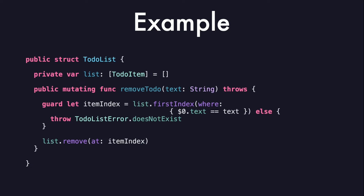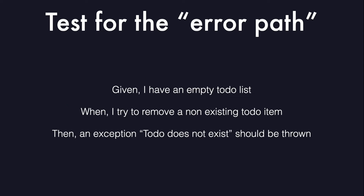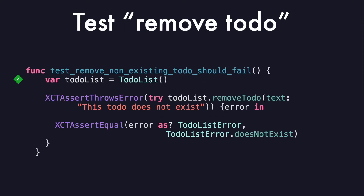Looking at the implementation for remove to-do again, the code actually has two paths: the happy path which we just tested, and an error path with the guard statement which throws an exception. We already tested the happy path, so let's test the error path. Using the given/when/then syntax: given I have an empty to-do list, when I try to remove a non-existing to-do item, then an exception 'to-do does not exist' should be thrown. We first test that the error is thrown, then the error gets captured in a closure and we assert that the error is indeed 'does not exist'. Once we get into the habit of using those words, our tests will consistently get divided into three sections and will be really easy to read.